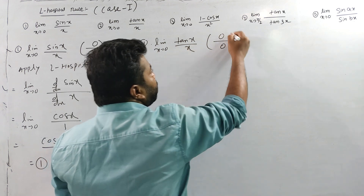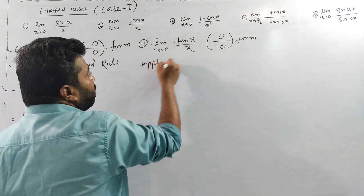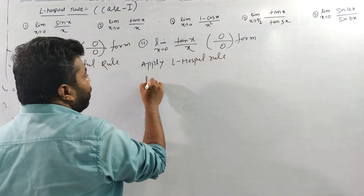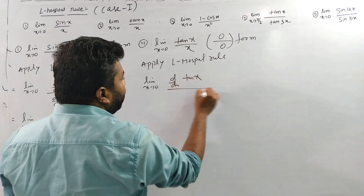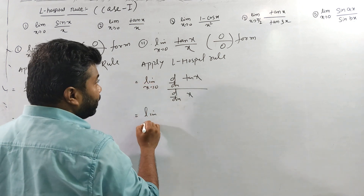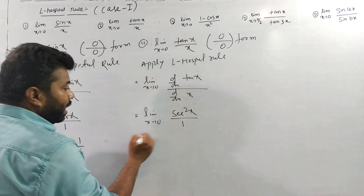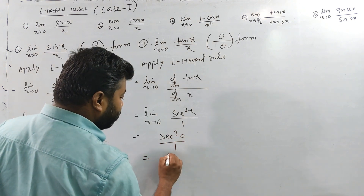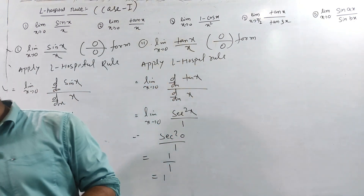For the next question, again 0/0 form, apply L'Hôpital's rule: limit x tends to 0 of the derivative of x by derivative of x. The limit x tends to 0, then tan(x) relates to x. So sec²(0)/1 = 1/1, so the answer is 1.